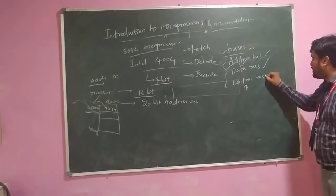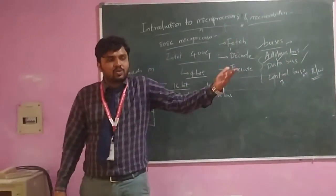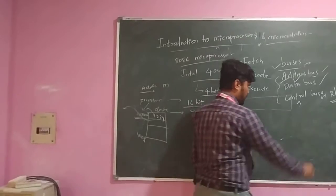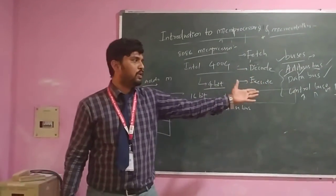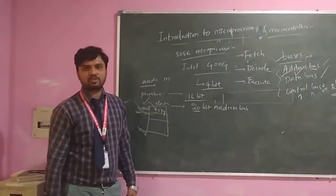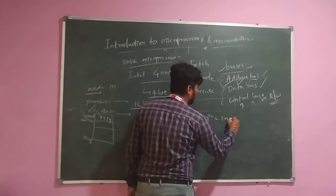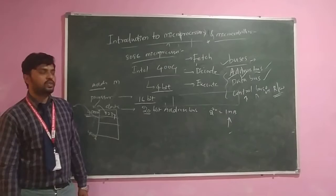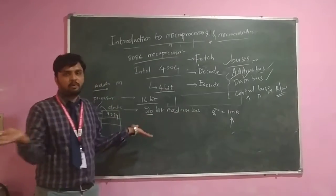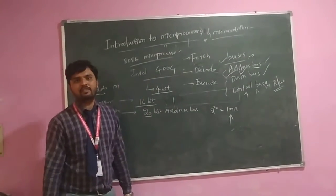The control bus mainly has two signals — read and write. Whenever you are accessing memory from outside devices or within a device, whether you want to read data or write data, we use the control bus, which is mainly used during memory interfacing. In the 8086 microprocessor, we have a 20-bit address bus, which means we can access 2 to the power 20 — approximately 1 MB of memory. An important point is that the microprocessor does not have its own memory, but because it has a 20-bit address bus, it can access 1 MB of memory.